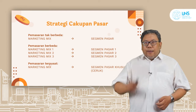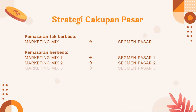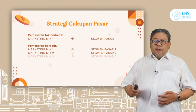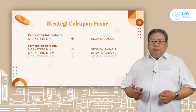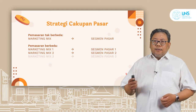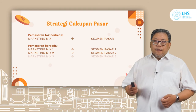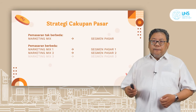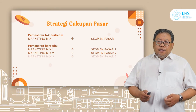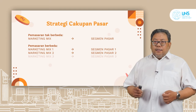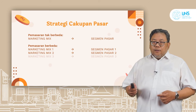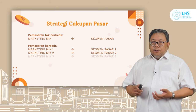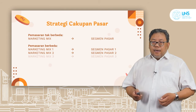Berikutnya adalah strategi cakupan pasar. Yang pertama adalah pemasaran tak berbeda, menggunakan marketing mix ketika menentukan segmen pasar yang sangat umum. Lalu yang kedua adalah pemasaran yang berbeda, menggunakan tiga pola marketing mix: marketing mix satu untuk segmen pasar satu, marketing mix dua untuk segmen pasar kedua, serta marketing mix tiga untuk segmen pasar ketiga. Yang terakhir adalah pemasaran terpusat, menggunakan marketing mix untuk segmen pasar yang khusus atau ceruk, di mana konsumen potensinya sedikit tetapi cukup bermanfaat dalam kegiatan pemasaran.